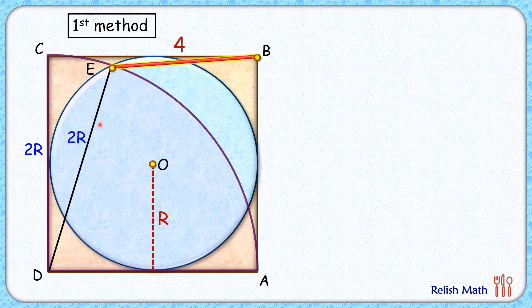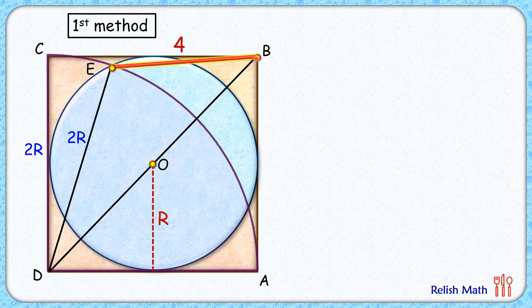Let's draw the diagonal of this square. The diagonal length we know is s times root 2. Here s is 2r, so the full diagonal length will be 2 times root 2 times r. DO length will be half of that, which is root 2 times r, and OB will also be root 2 times r.